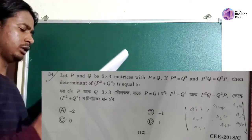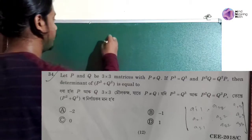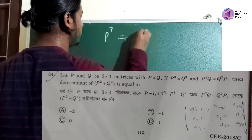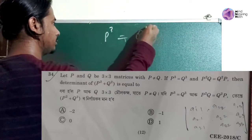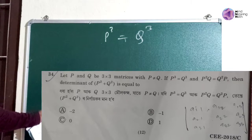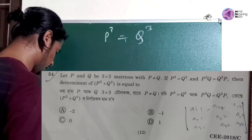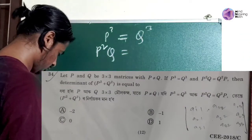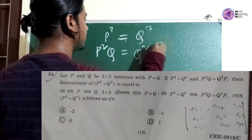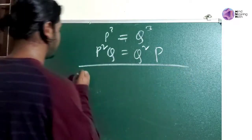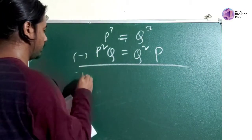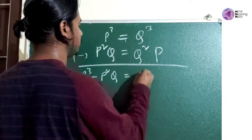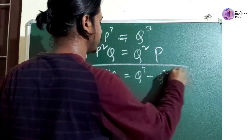So first: P cubed is equal to Q cubed. Second condition: P squared Q is equal to Q squared P. So subtracting: P cubed minus P squared Q is equal to Q cubed minus Q squared P.